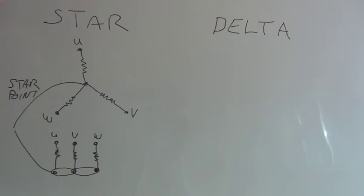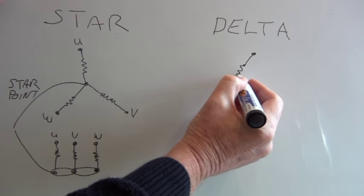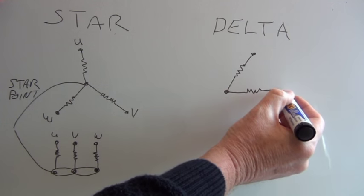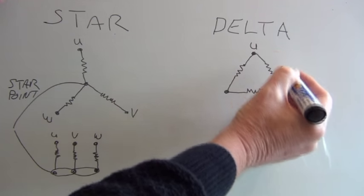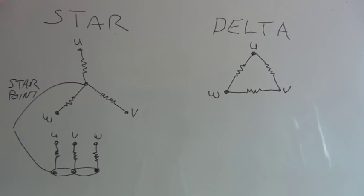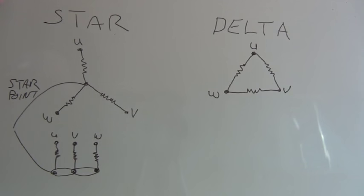Now if we look at the delta connection, we have a connection like this where we have U, V, and W, and it gives you that nice triangular shape where these are the internal windings of the motor.